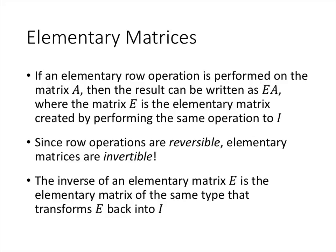The conclusion is that an elementary row operation performed on matrix A can be represented as the matrix multiplication EA, where E is the elementary matrix. An important observation is that because row operations are reversible, elementary matrices are invertible. The inverse of an elementary matrix corresponds to the opposite row operation: if you swapped rows 1 and 2, swap them back; if you added 4 times row 3 to row 2, add negative 4 times row 3 to row 2; if you scaled a row by 3, scale it by 1/3.